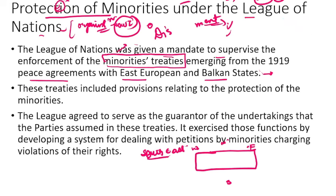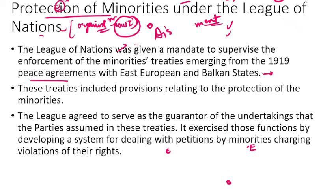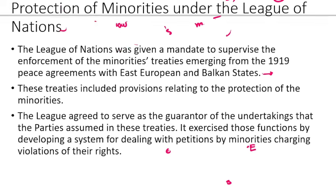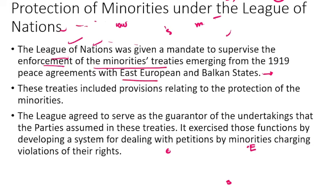So here we are seeing that human rights became part of world politics and international politics — things happening in the background. We are not yet at the official proclamation. Just so you don't get confused in the evolution: protection of minorities, League of Nations has also talked about this. Enforcement of minority treaties came from 1919 peace agreements with East European and Balkan states. In these treaties there was a provision for protection of minorities, and the League agreed to serve as guarantor.